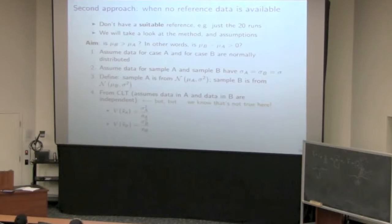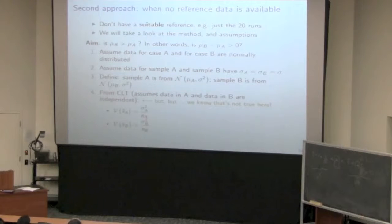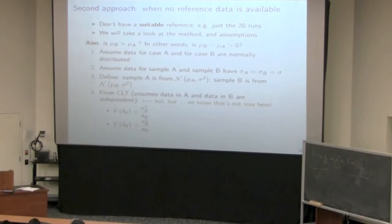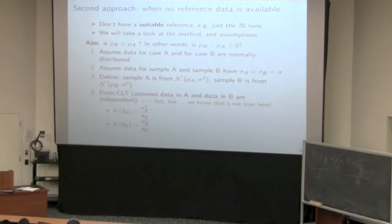I'd like to take a look at how we can analyze that data if we only have the 10 data points from system A and the 10 data points from system B. The reason I want to look at this is because it introduces the idea of a hypothesis test. You've learned about hypothesis tests. I would actually like you to forget everything you've learned about hypothesis tests, because they're really a bad way of judging any sort of change in the system. I'm going to show you a far better way using the same example.